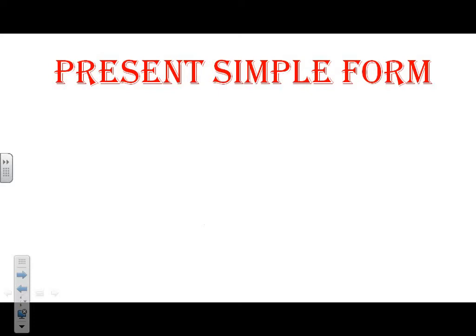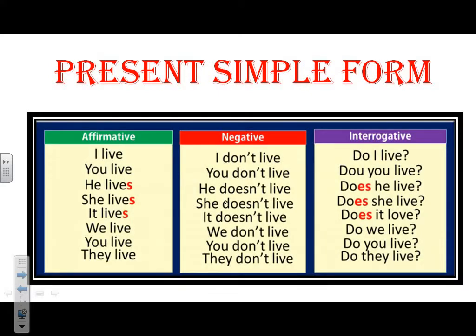Now let's look at the form — how do we form the Present Simple? We have affirmative sentences, negative sentences, and interrogative questions. In the affirmative, I add S, ES, or IES with he, she, or it. With I, we, they, you, we leave the verb in the infinitive form. For example: I live, you live, he lives, she lives, it lives.